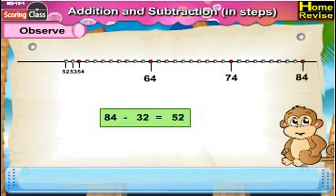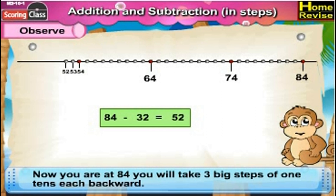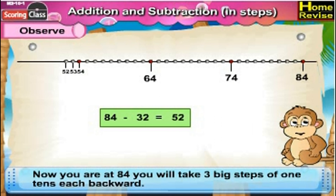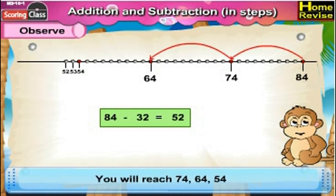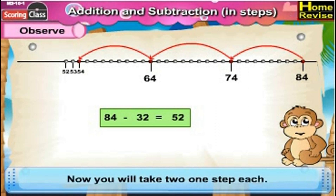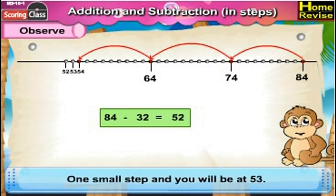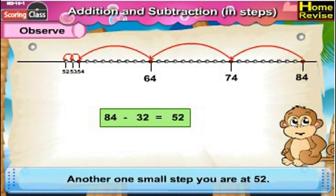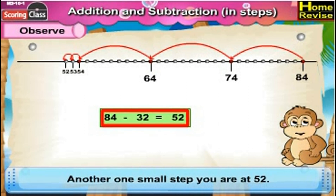84 minus 32 is 52. Now, you are at 84. You will take 3 big steps of 10 each backward — you will reach 74, 64, 54. Now you will take 2 small steps of 1. One small step and you will be at 53. Another small step and you are at 52. So 84 minus 32 is 52.